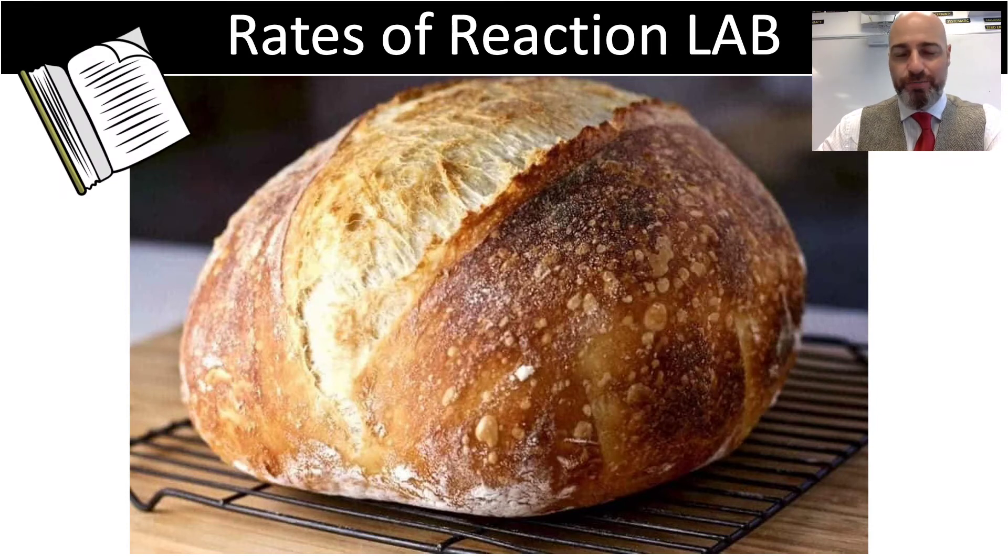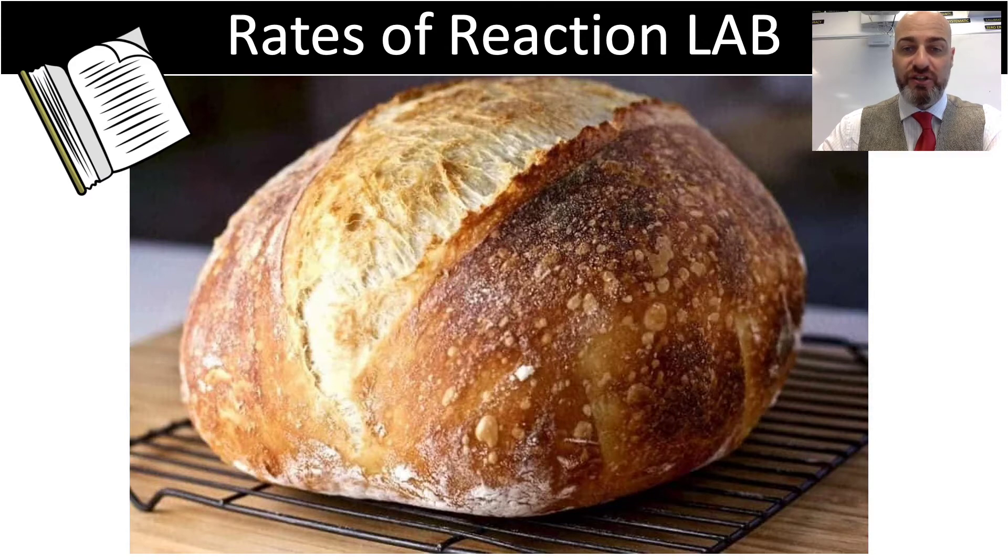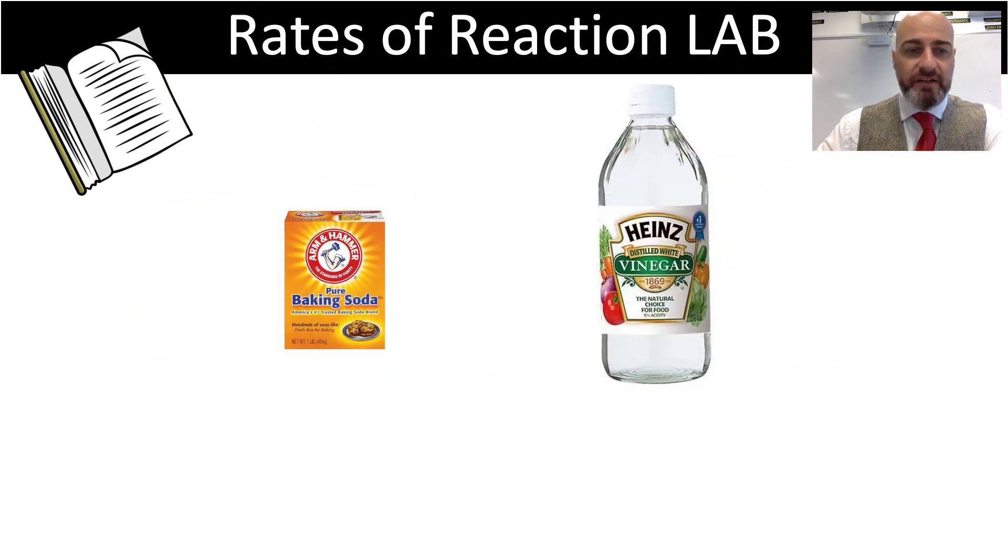Hey there, this video is to help you with the method of mixing your reactants for your rates of reaction lab. Your main reactants that you'll be using will be the baking soda and you'll be adding that to vinegar, a total cost of probably about $4 or $5.